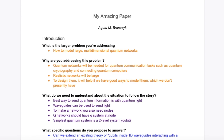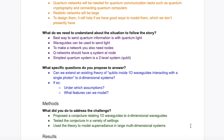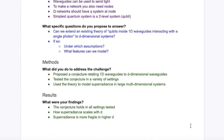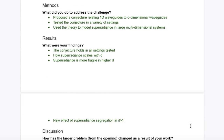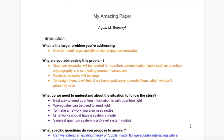If you did the exercises from the previous video, you should now have this lovely little document with an introduction, a method section, a result section, and a discussion section. And inside each section, you should have the answers to the questions you answered for each of the OKA elements. In this video and the upcoming videos, we're going to see how to actually turn those answers into a full introduction.